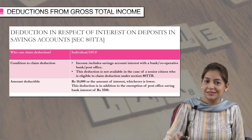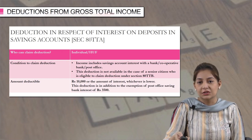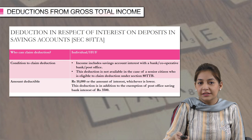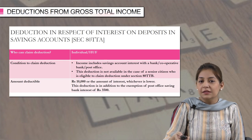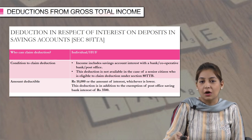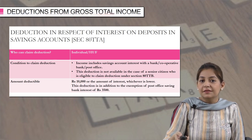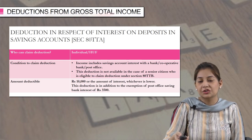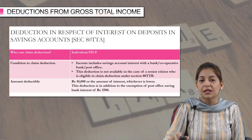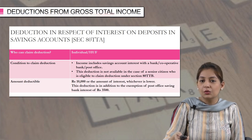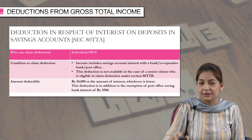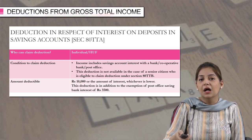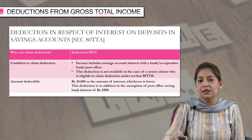Who can claim the deduction? This deduction is available to both individuals as well as HUF. The conditions are: number 1, your income includes savings account interest with a bank, cooperative bank, or post office. This deduction is not available in the case of a senior citizen who is eligible to claim deduction under section 80TTB. So you can claim the deduction under this section only if you are not a senior citizen, because if you are a senior citizen, the interest income is dealt with under section 80TTB.